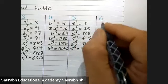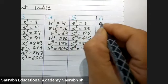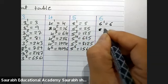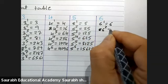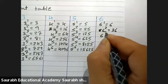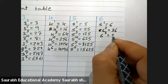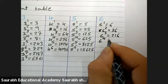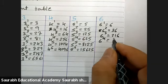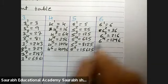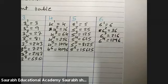Next is 6 raise to 1 is 6, 6 raise to 2 is 36, 6 raise to 3 is 216, 6 raise to 4 is 1296.